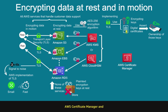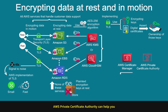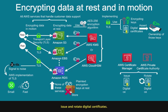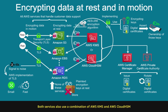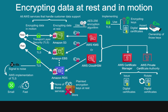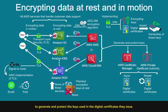Implementing TLS requires the use of encryption keys and digital certificates that assert the ownership of those keys. AWS Certificate Manager and AWS Private Certificate Authority can help you issue and rotate digital certificates. Both services also use a combination of AWS KMS and AWS Cloud HSM to generate and protect the keys used in the digital certificates they issue.